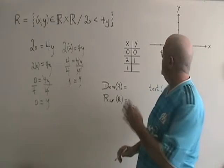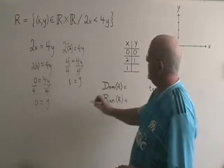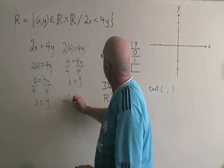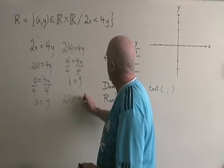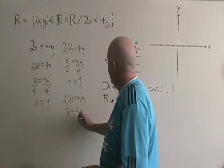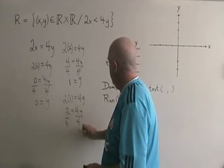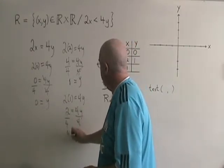I have enough information to graph my line, but I'm going to do a third point just in case. If x equals 1, 2 times 1 equals 4y. That means 2 equals 4y. Divide both sides by 4, and I have y equals 0.5.